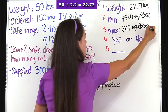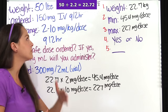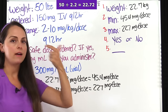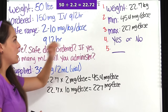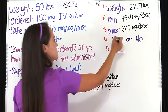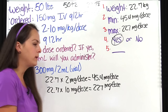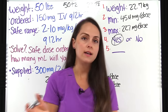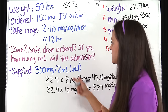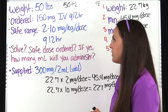We check whether what's ordered falls within that range. The physician ordered 150 milligrams IV every 12 hours, and 150 falls between 45.4 and 227 milligrams per dose. So yes, this is a safe dose, and we can proceed. Now we look at what we're supplied with: a vial that reads 300 milligrams per 2 mL.